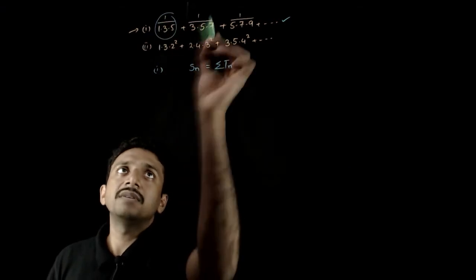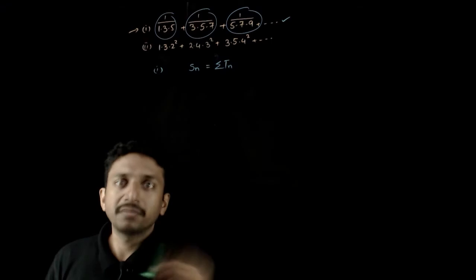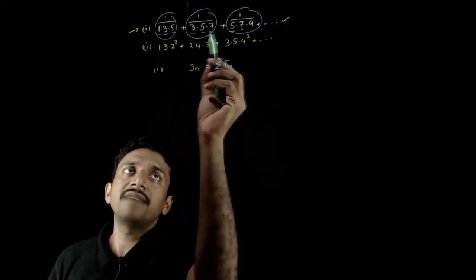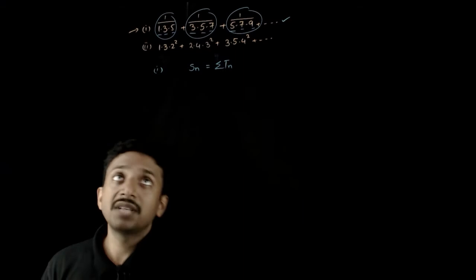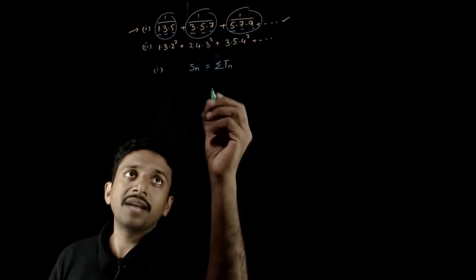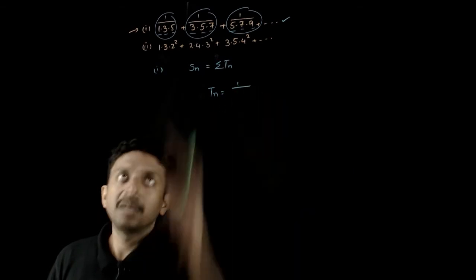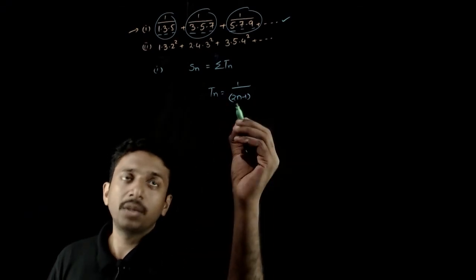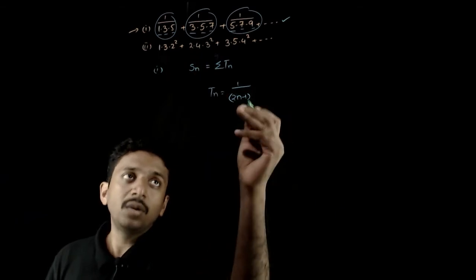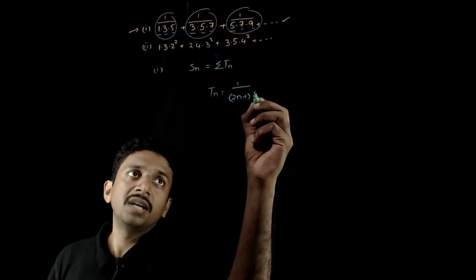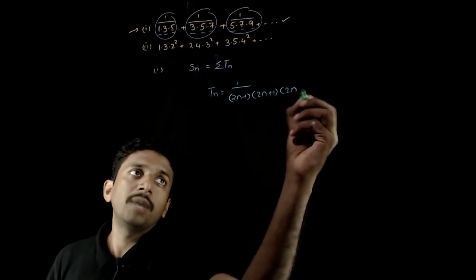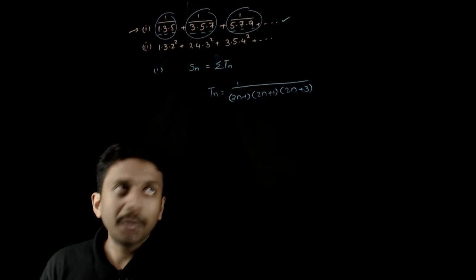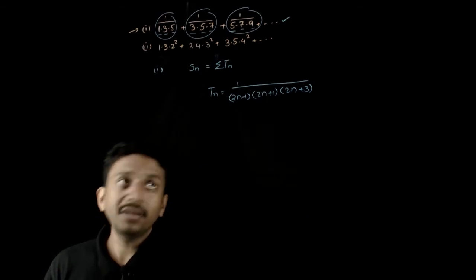Let us carefully observe the first sequence. The first terms 1, 3, 5 are in AP; the second terms 3, 5, 7 are in AP; and 5, 7, 9 are in AP — these are consecutive odd numbers. So we can write Tn = 1/((2n−1)(2n+1)(2n+3)), since 2n−1 gives consecutive odd numbers.